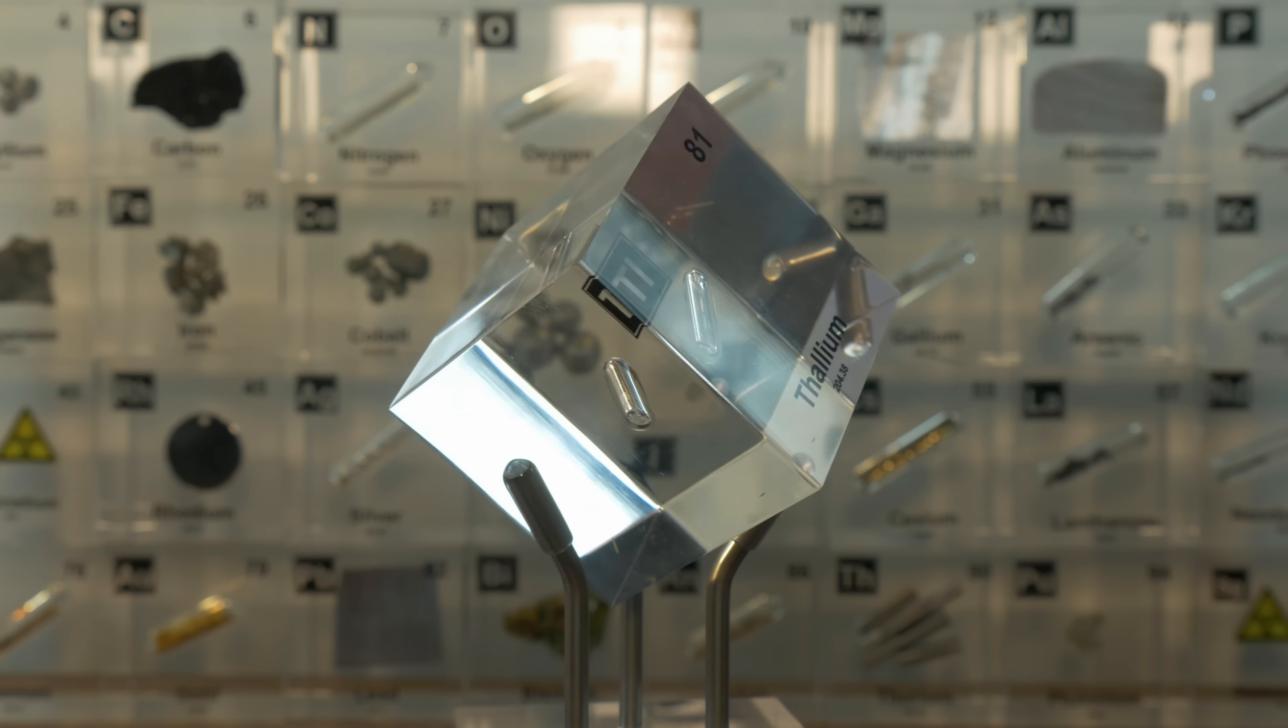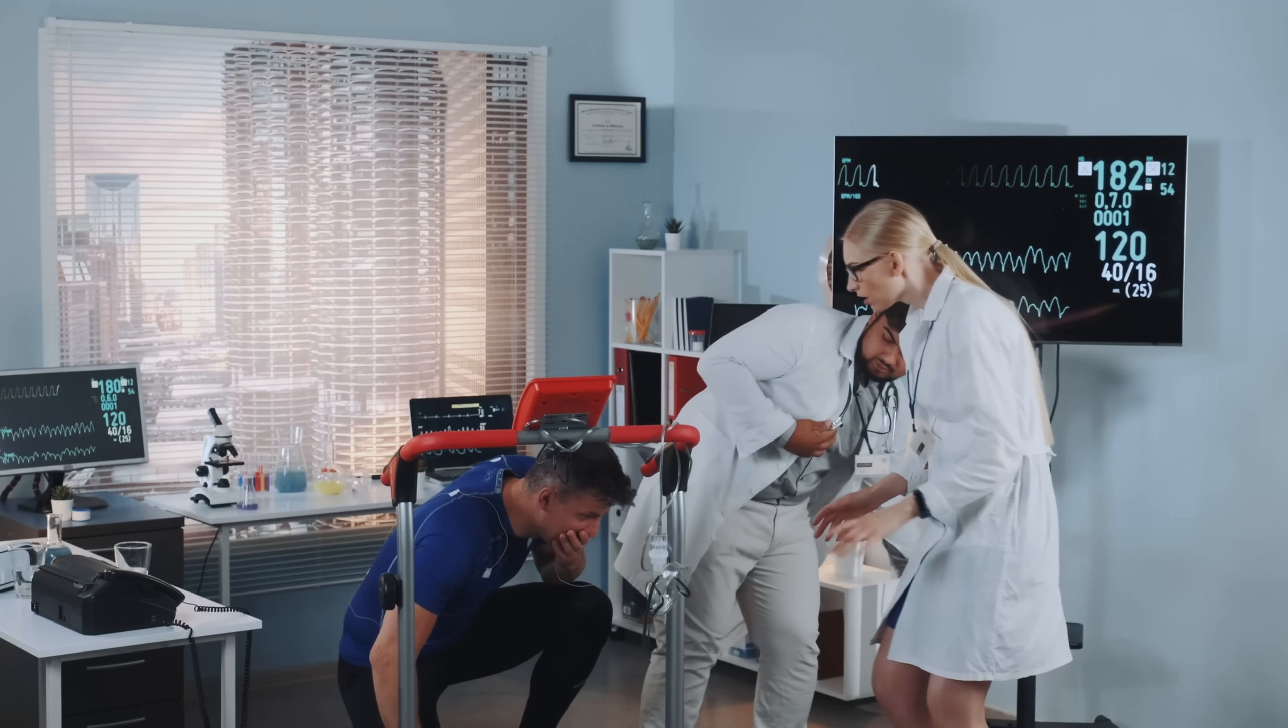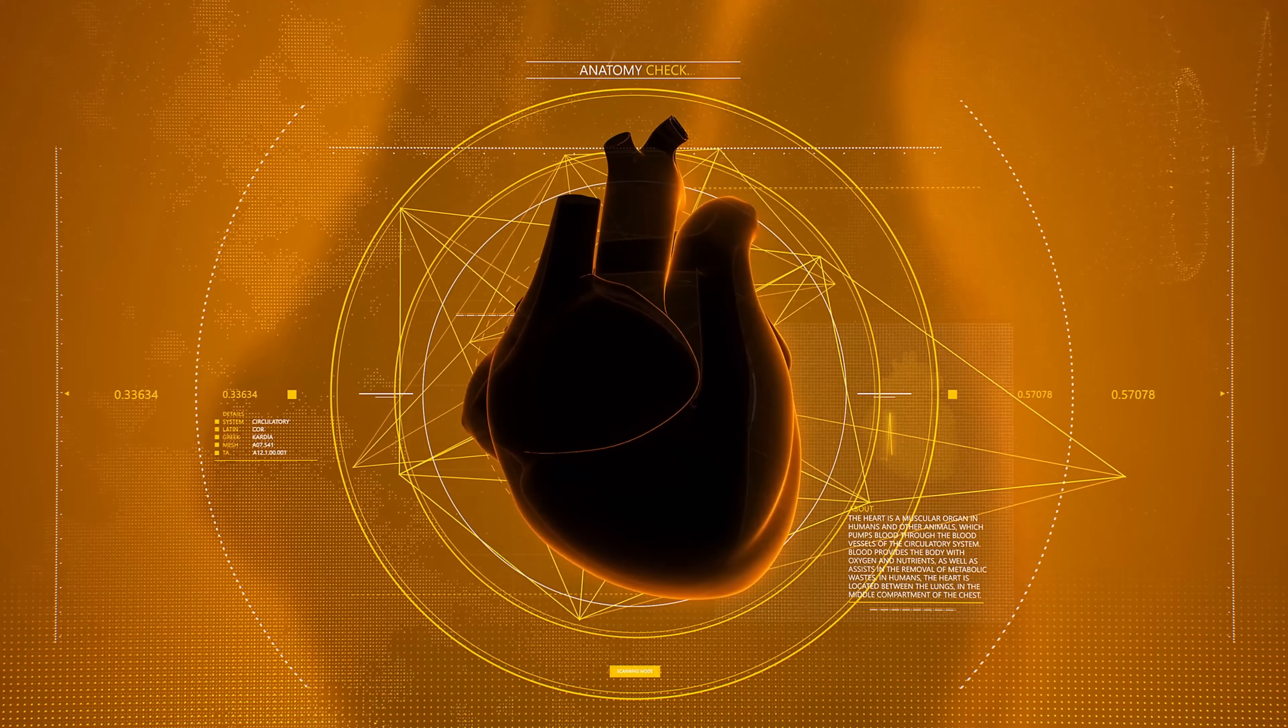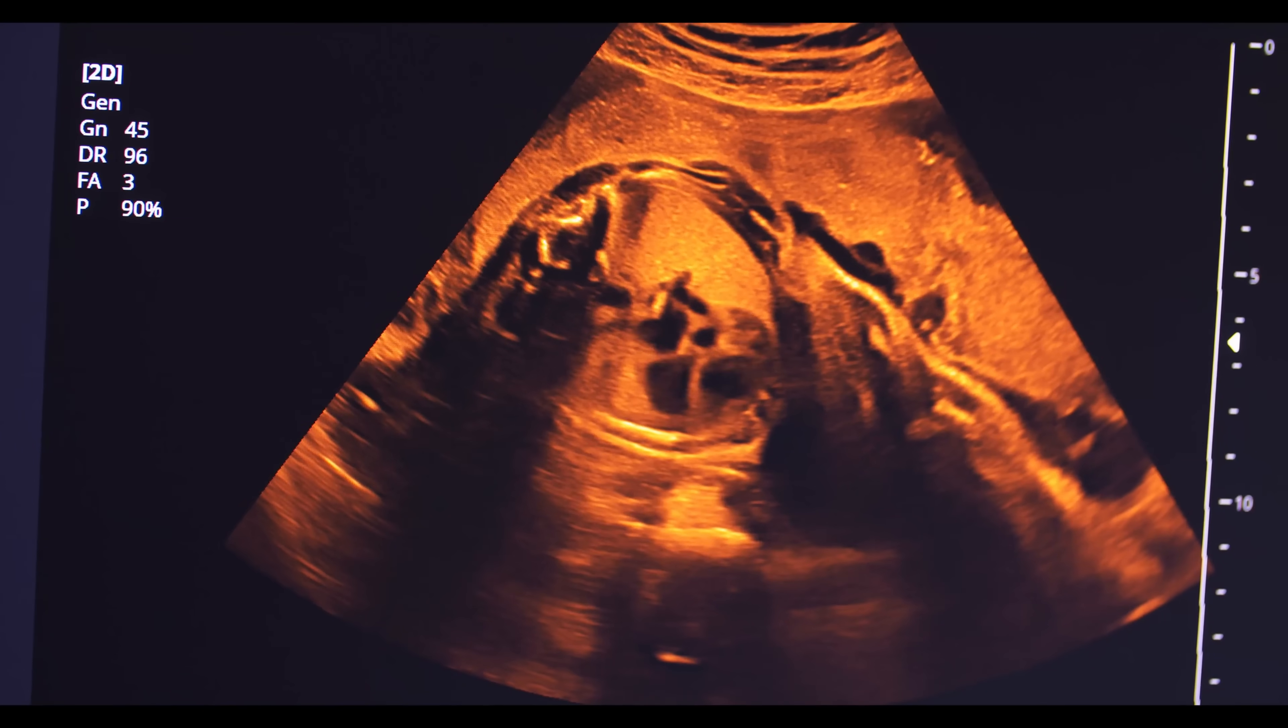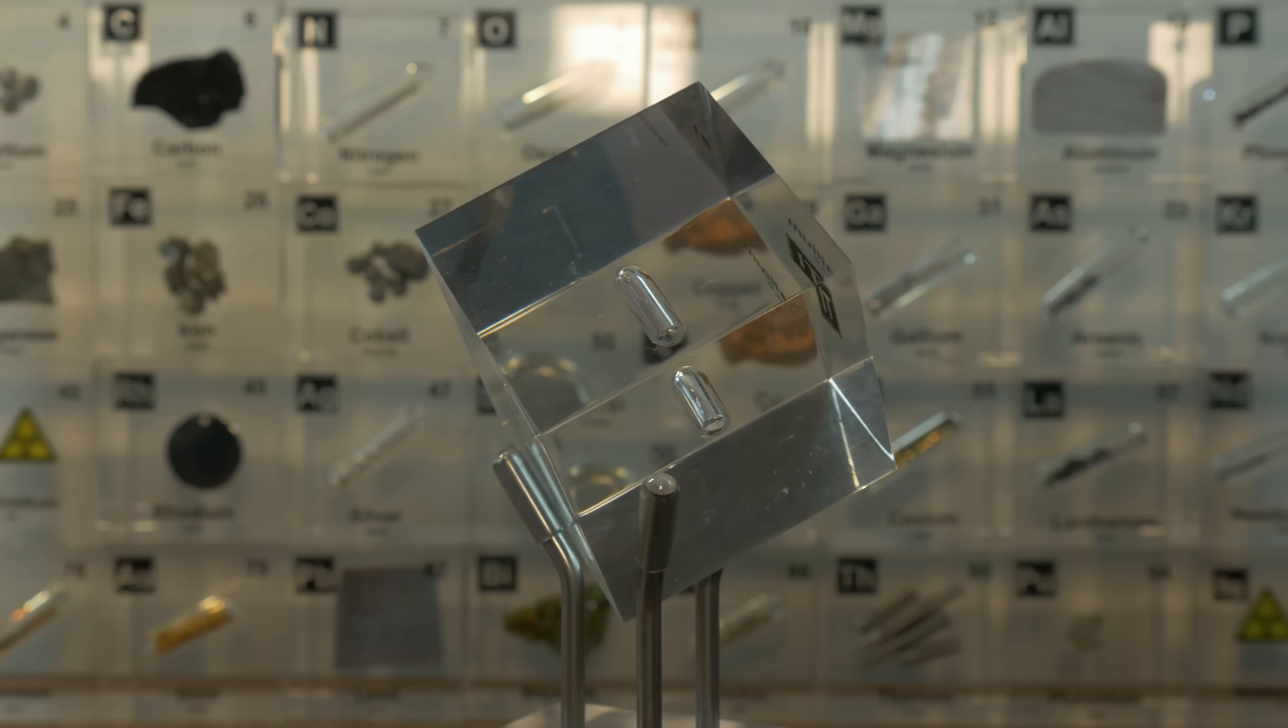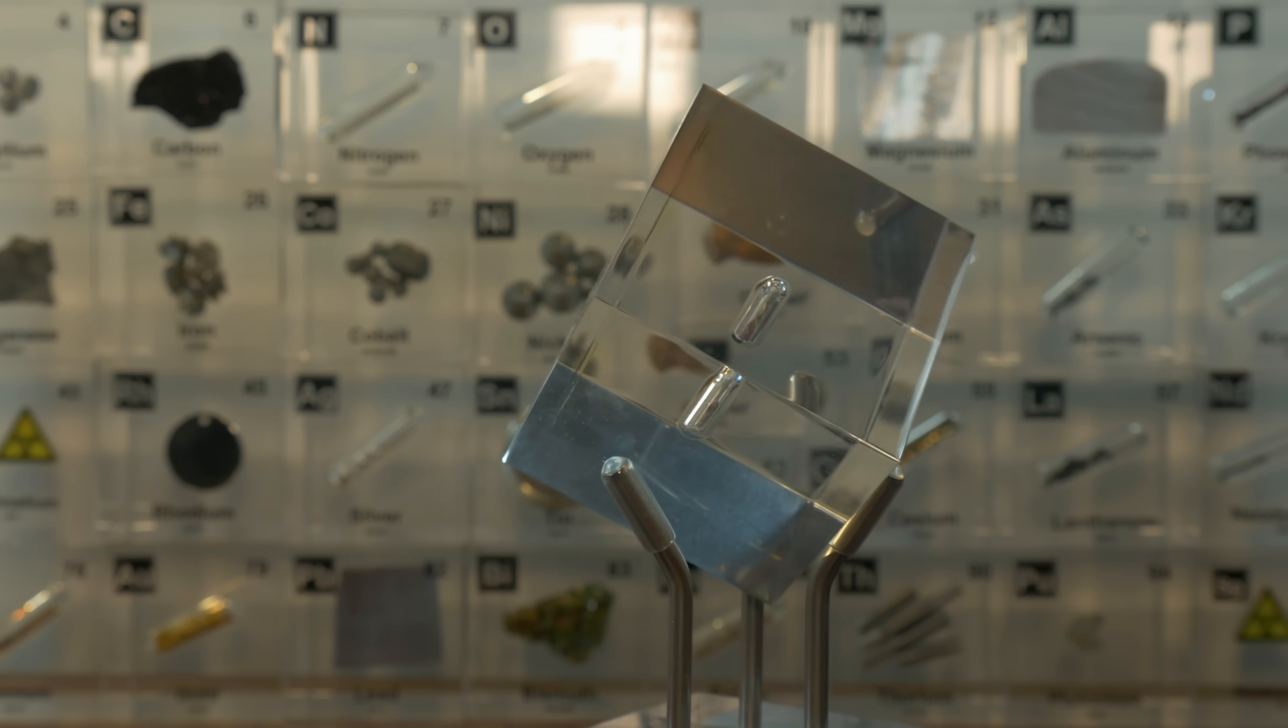If you have ever had a stress test for your heart, you might have encountered thallium in a life-saving role. A radioactive form of the element thallium-201 is used in nuclear medicine. Doctors injecting a tiny, carefully calibrated amount of thallium-201 chloride into a patient because it behaves like potassium. It flows to the heart muscle. Special scanners then track the radioactivity to create an image of blood flow in the heart, revealing blockages or damage in the cardiac tissue. It's called the thallium stress test, and it has helped diagnose heart diseases for decades. It's quite a twist that an element known for causing harm can also be used to detect and prevent harm in patients. All about that dose and context.